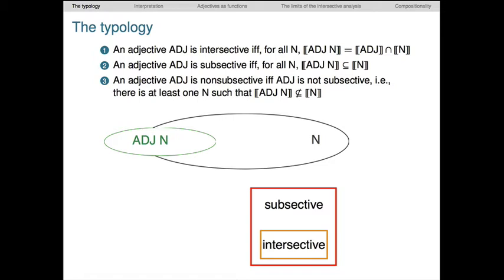In addition, the core requirement itself is really weak. It just says that we can find at least one entity that is in ADJ N, but not in N. There might be many that are. In other words, we might fail the subsective requirement by the smallest margin, and that's enough for non-subsective.